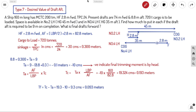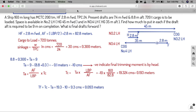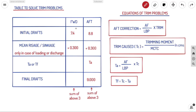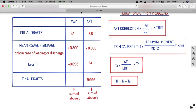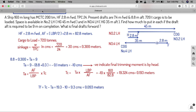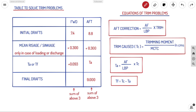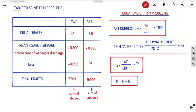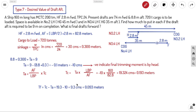Now we can find the final forward draft. We know the initial forward draft, the mean sinkage, and tf. Since the trimming moment is by the head, we add tf to the forward side: 7.4 plus 0.3 plus 0.093 gives a final forward draft of 7.793 meters.